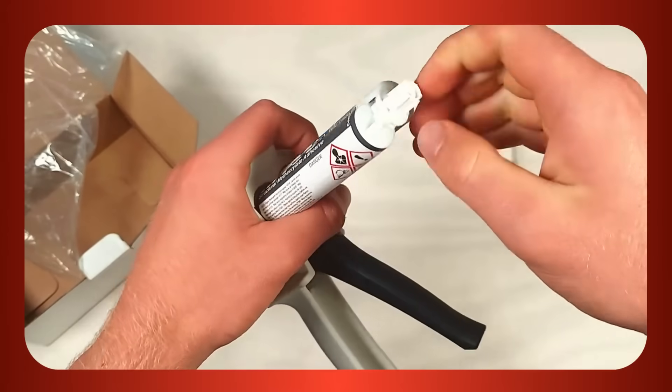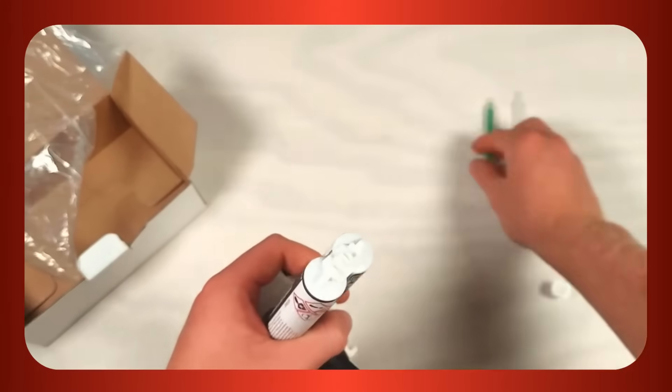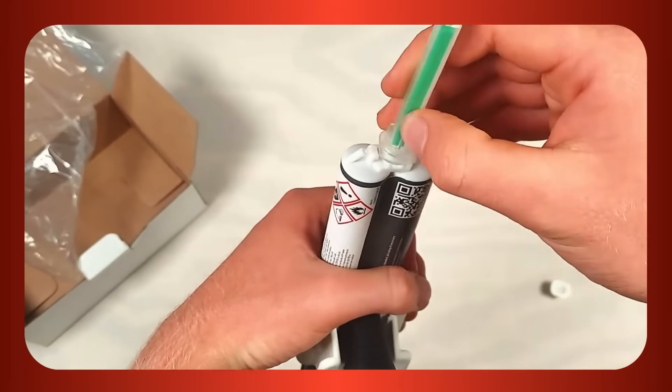Remove the cap off the end of the canister and push and twist a mixer into its place. There are several types of mixers and we recommend reading our blog post on two-part adhesives to learn more.